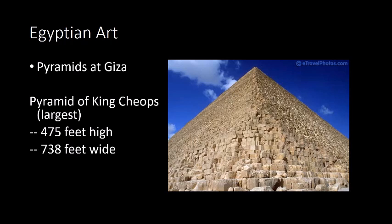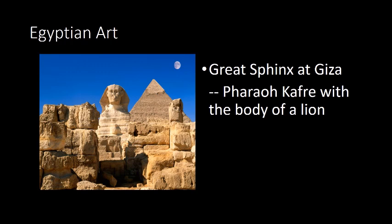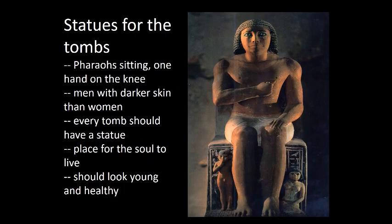The Great Pyramid is 475 feet high, 738 feet wide, took 20 years to build, and is made of limestone — the final resting place of the Pharaoh. We can also recall the Great Sphinx at Giza, depicting Pharaoh Khafre with the body of a lion.